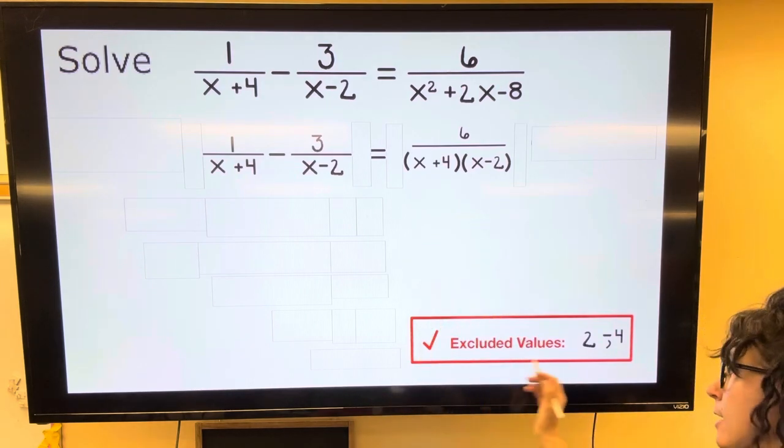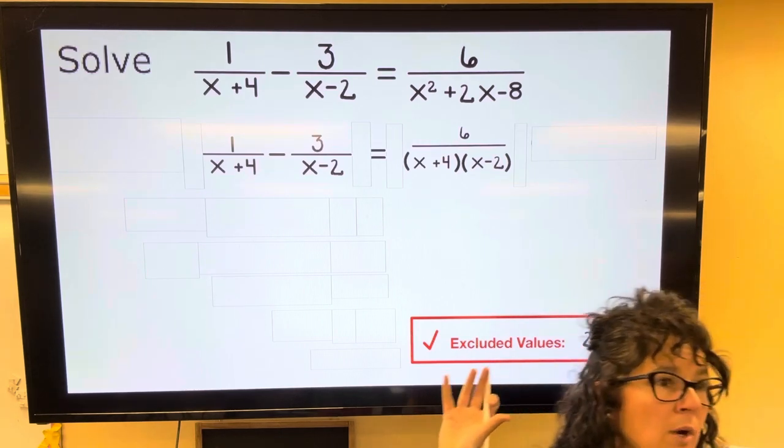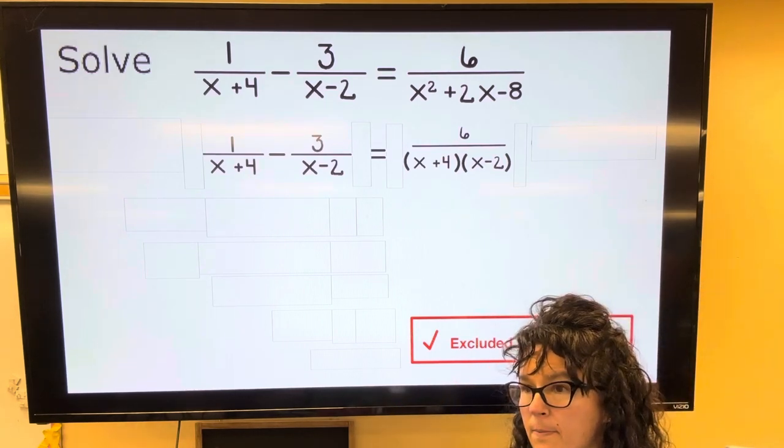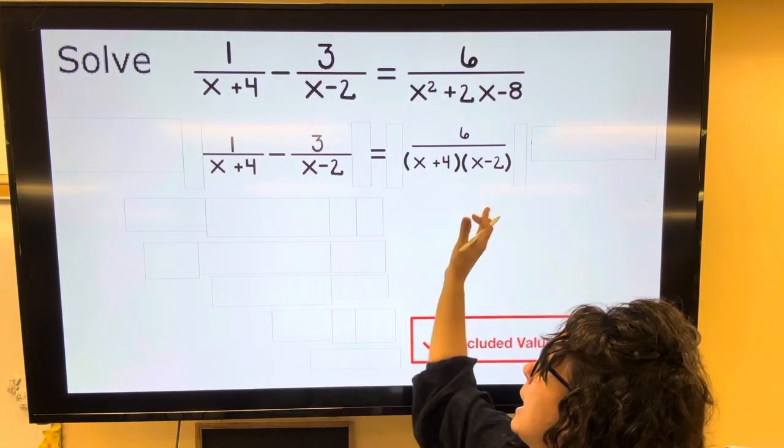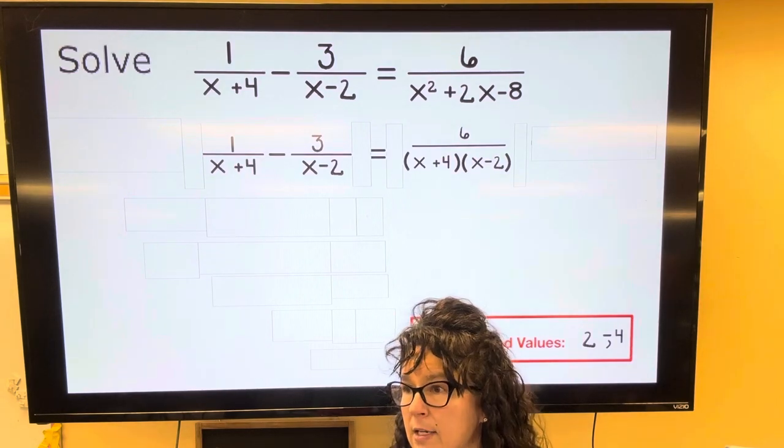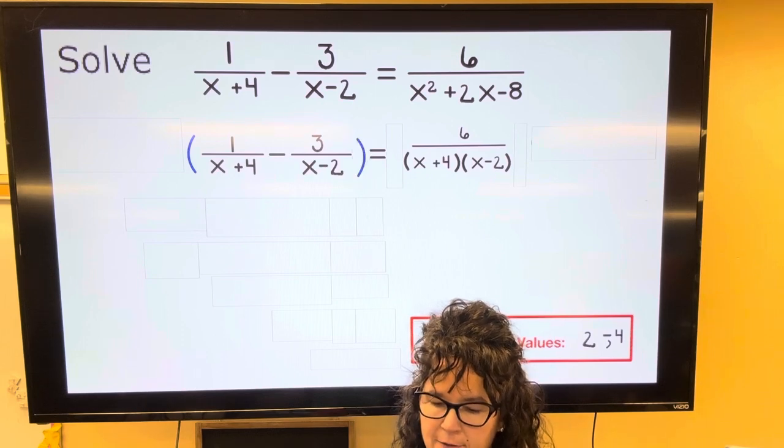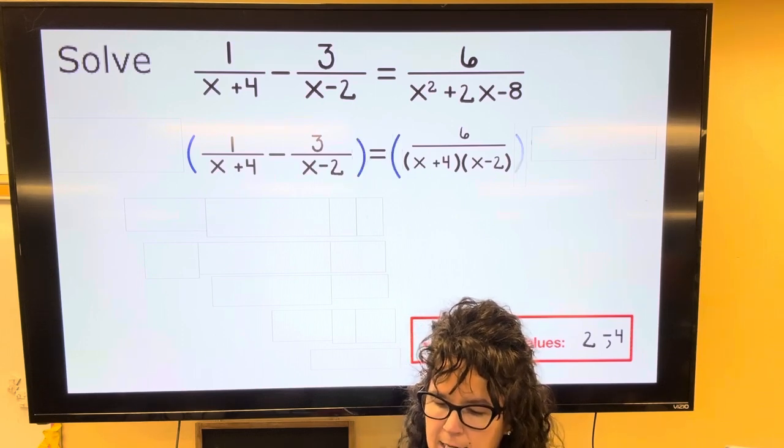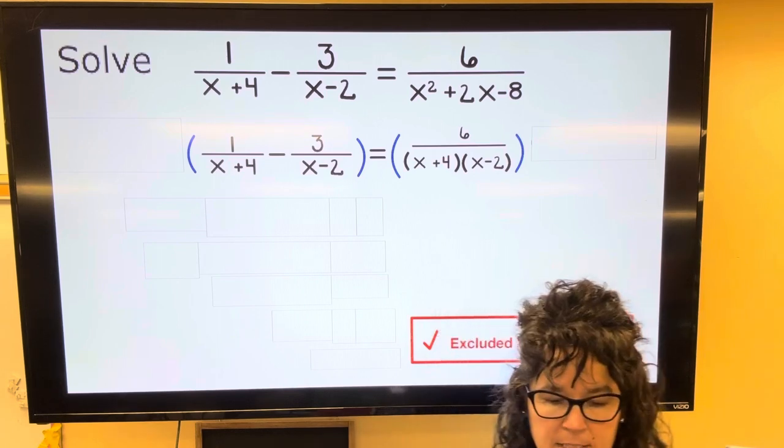Okay, so 2 and negative 4 are the couple of numbers I do not want to have as answers. So when I finish solving that, if I end up with either one of those numbers, I'm going to have to throw it out and say no solution. Okay, so let's go ahead and multiply both sides by the denominators because that's your shortcut. So here I'm going to put a set of parentheses around the left and around the right. And the denominators in this one are both x plus 4 and x minus 2.